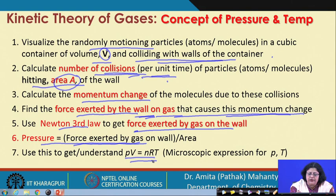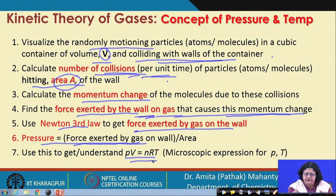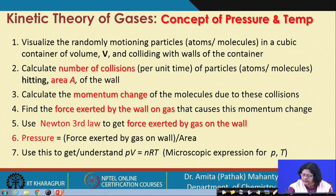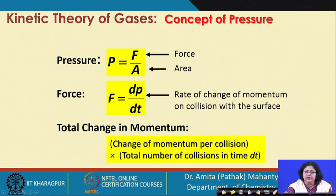To summarize the strategy: we define the volume of the container and the number of molecules in it, then find the number of collisions on a unit area per unit time. We calculate the change in momentum during collision with the wall, find the force exerted, and from force divided by area obtain the pressure exerted by the gas. Pressure equals force per unit area, and force is the rate of change of momentum. Total change in momentum equals change in momentum per collision multiplied by the total number of collisions in time delta t.